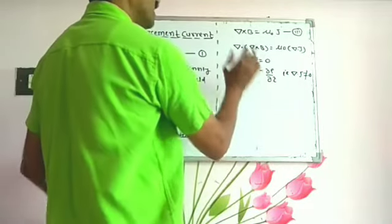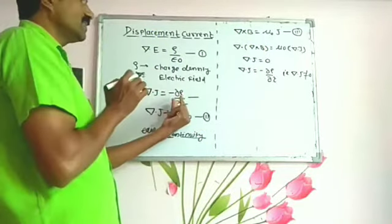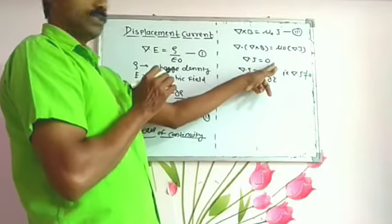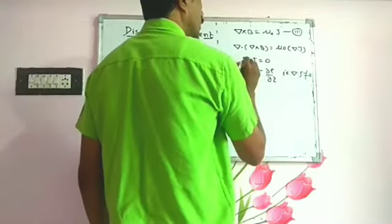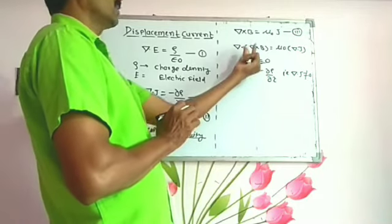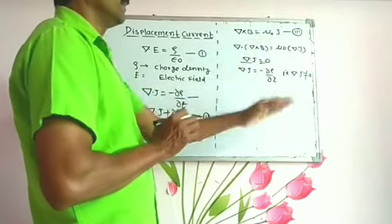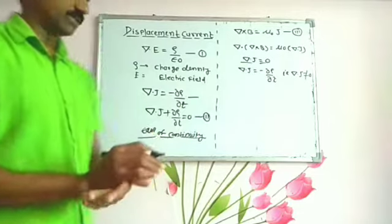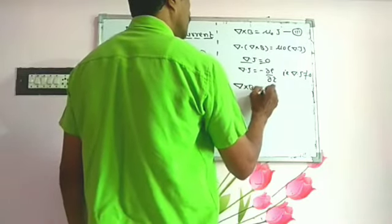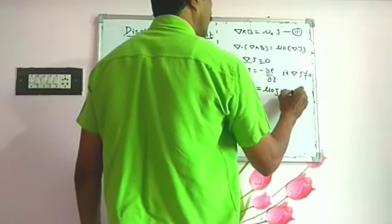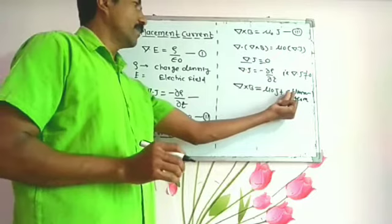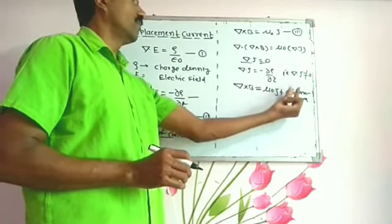So there is a contradiction: Ampere's Law implies del·J = 0, but the continuity equation says del·J ≠ 0 for time-varying fields. Del·J = 0 holds only for steady current. For time-varying fields it is not zero. Therefore, there is a need to modify Ampere's Law.